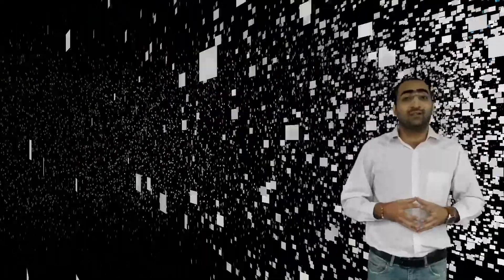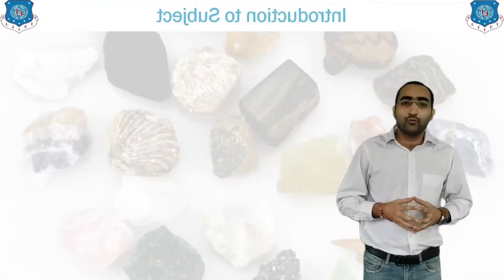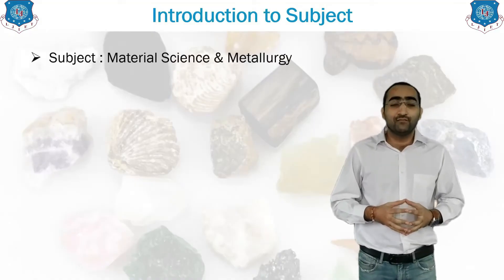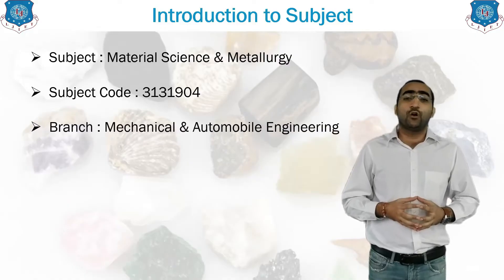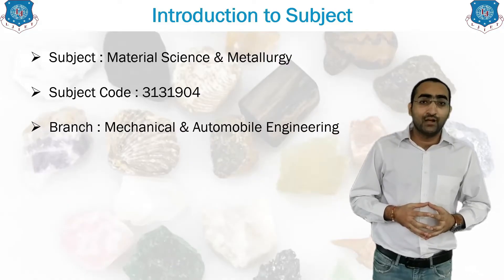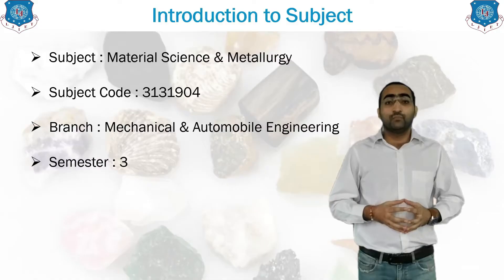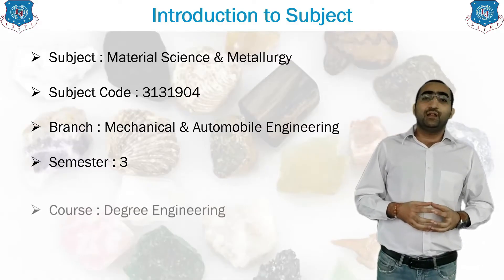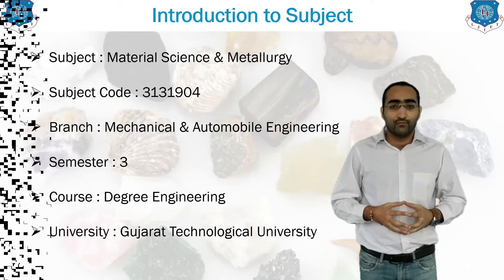Introduction to the subject: the subject name is Material Science and Metallurgy. The subject code according to the board is 3131904. It comes under the branch of Mechanical and Automobile Engineering and is included in semester number 3. The course is included for degree engineering and has been given by Gujarat Technological University.